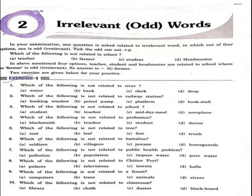Question number six: which of the following is not related to a battalion? Options are soldiers, villagers, jawans, home guards. The right answer is villagers.